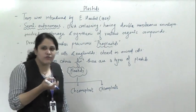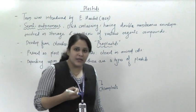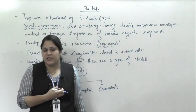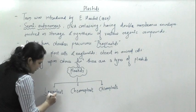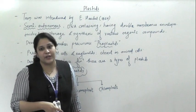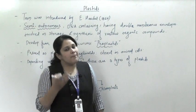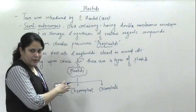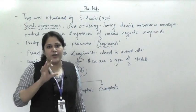Leucoplast — the word 'leucos' means colorless. These plastids are colorless; they don't have any particular color. Since they are colorless, they don't have any type of photosynthetic pigment, which means they are not performing the function of photosynthesis. So leucoplasts are not involved in photosynthesis — instead they help in the storage of different types of organic compounds. They can store starch, they can store proteins, they can store lipids. Based on the type of stored material, there are three types of leucoplast.